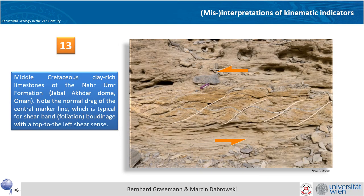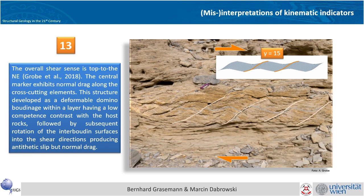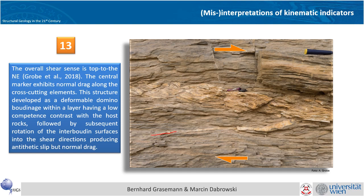The example from Oman, which I got from Janos, I also gave the wrong shear sense. You might be confused by the very nice S-shape geometry and the nice C' primes, but in that case it's a deformable domino foliation boudinage, and the correct shear sense would be top to the right — comparable with our numerical model. When Arne Grobe showed this with the correct interpretation at the International Congress, geologists almost interrupted him shouting that he got the shear sense wrong, but the correct shear sense is also confirmed by the quartz veins which are pinched and swelled, giving you the top-to-the-right shear sense.